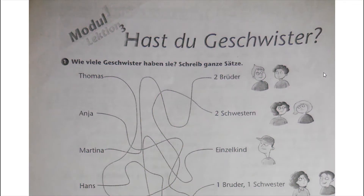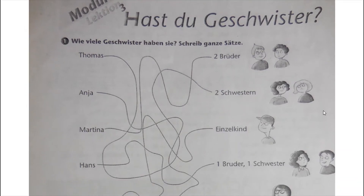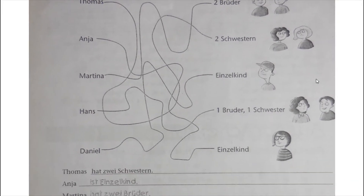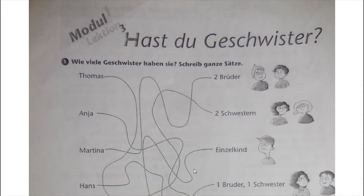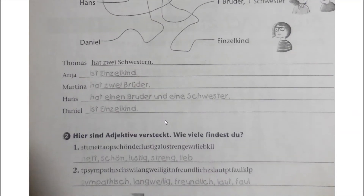The first question asks 'Wie viele Geschwister haben Sie?' and we have to write down complete sentences with the help of the given information. So: Thomas hat zwei Schwestern. Ania ist Einzelkind. Martina hat zwei Brüder. Hans hat einen Bruder und eine Schwester. Daniel ist Einzelkind.